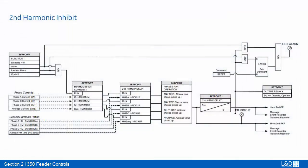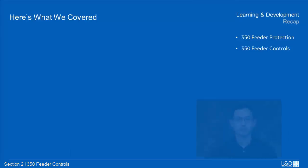Second harmonic operation is based on three conditions: fundamental phase current above the minimum supervision level, second harmonic ratio higher than the setting, and phase selection — any one, two, three, or average that meets the configuration.